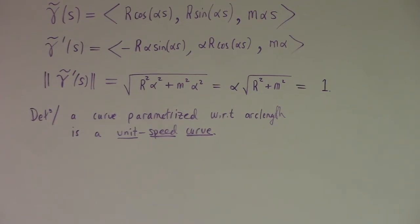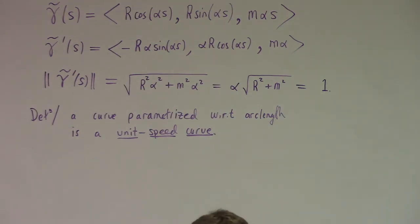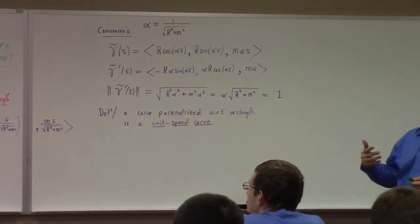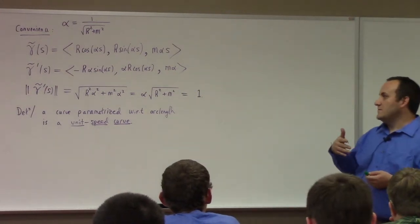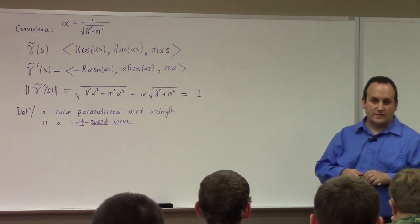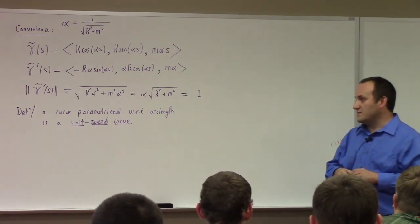I'm going to show you the Frenet apparatus for arc length parametrized curves today. We'll eventually learn how to do this for a curve parametrized with respect to time, but as a starting point it's simplest to consider the arc length parametrized case. This isn't throwing out many cases, because most — in fact all — the curves we're interested in can be so parametrized.